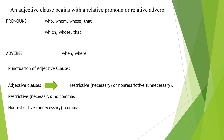An adjective clause can also modify an entire sentence; in this case, it comes at the end of the sentence. The relative pronoun is always 'which' and the clause is always non-restrictive. Example: 'The team won the championship, which shocked the opponents.' The verb in an adjective clause agrees in number with its antecedent. 'An employee who works part-time usually receives no benefits' — the verb 'works' is singular. 'Employees who work part-time usually receive no benefits' — the verb 'work' is plural.